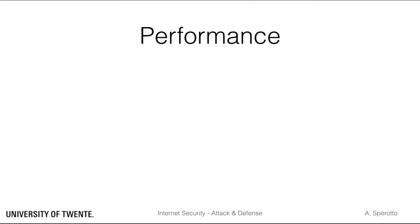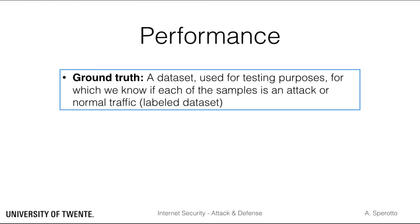Since we have established that an IDS will most likely make some detection errors, it is then important that we are able to quantify how well an IDS performed. To evaluate the performance of an IDS, we need two ingredients. First, we need a ground truth. A ground truth is a dataset for which we know if each sample — like a packet, a log entry, or any other data your IDS works on — is an attack or not.